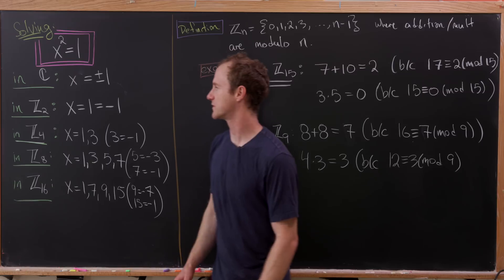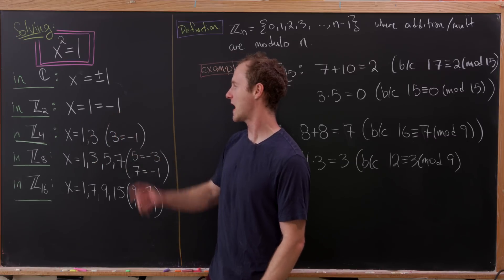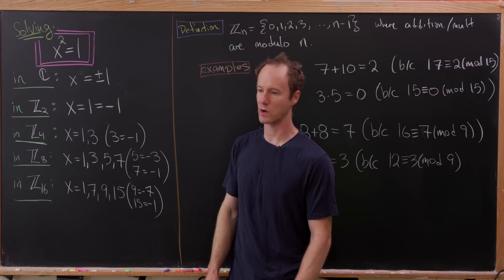So let's observe in ℤ₂, there's one solution. There's 1, but 1 happens to be the same thing as -1.